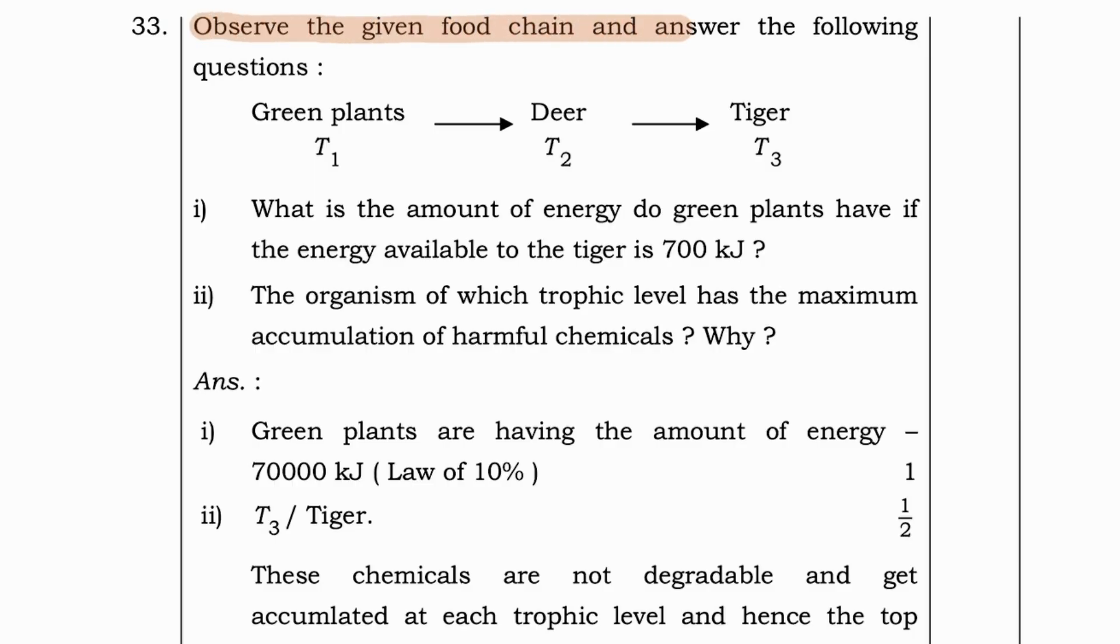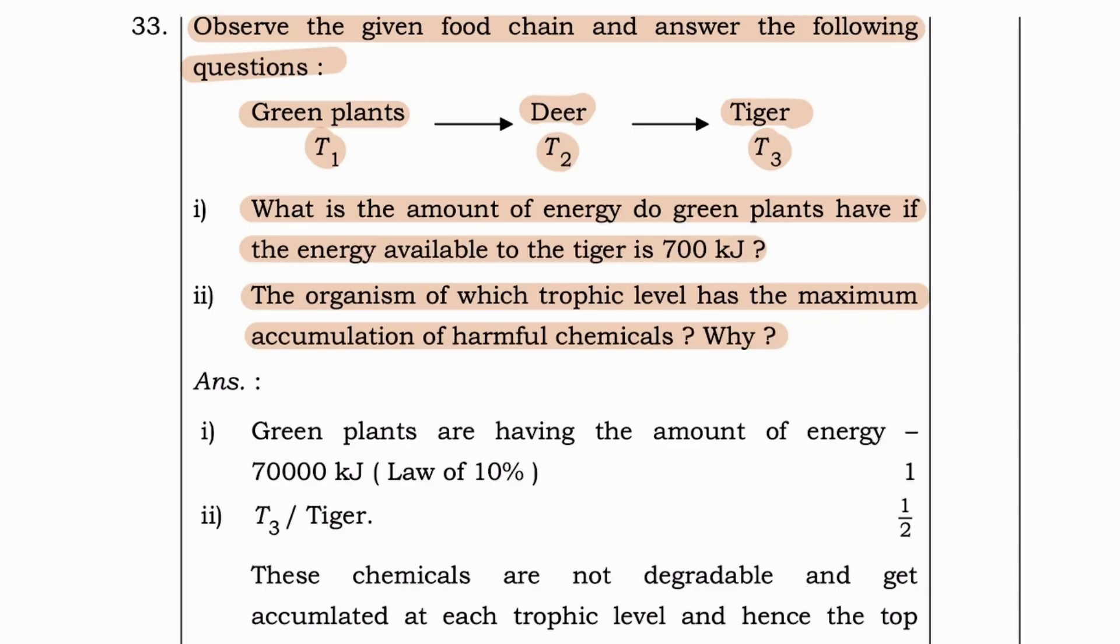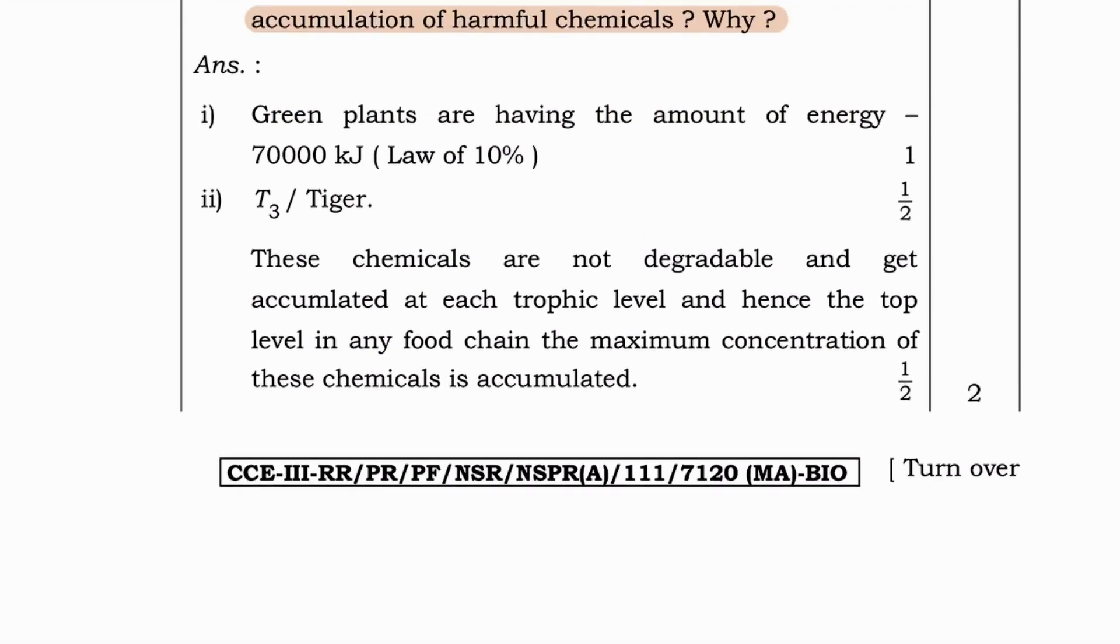Next question. Observe the given food chain and answer the following questions. Green plants T1. Deer T2. Tiger T3. What is the amount of energy do green plants have if the energy available to tiger is 700 kilojoule? And next. Is the organisms of which trophic level has maximum accumulation of harmful chemicals? And why?